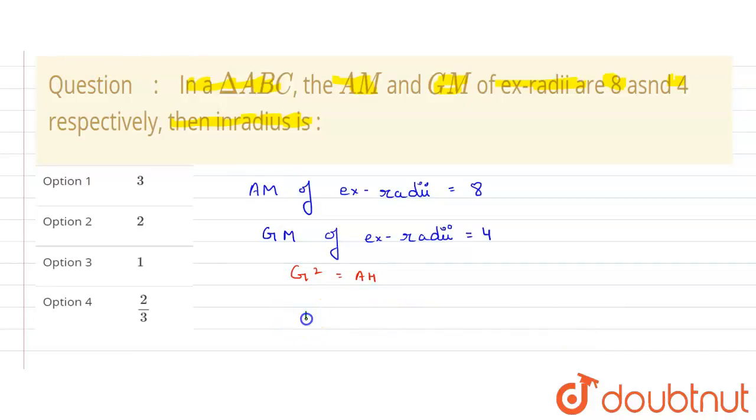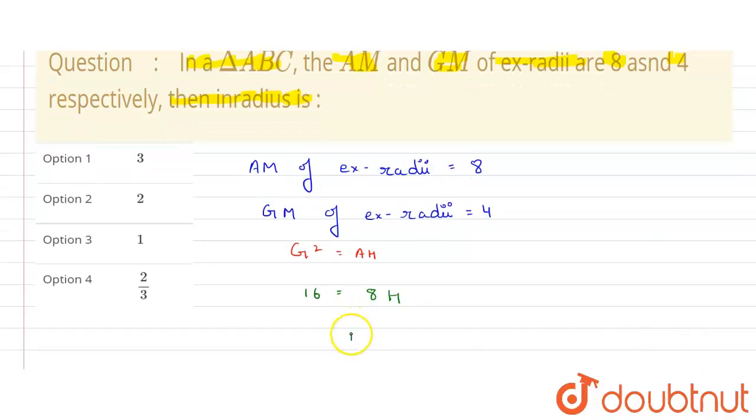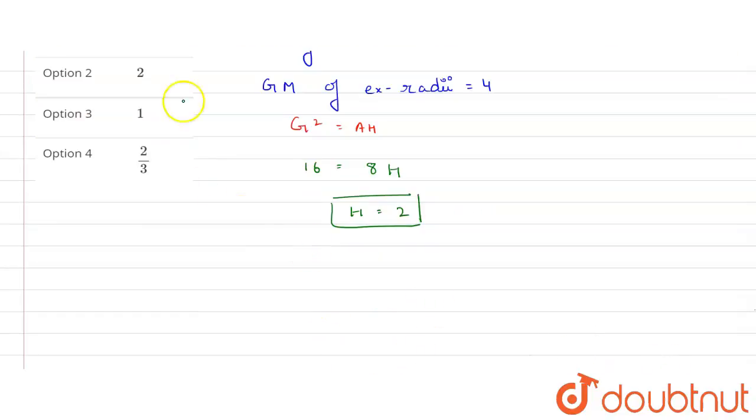Let's get the value here. G squared means 4 squared will be 16 equals 8 times H. So from here we can get the value of H, and H will be equals to 2. H is harmonic mean.